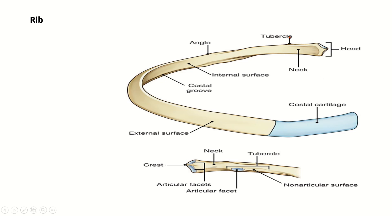Looking at a typical rib, the vertebral end is also called the head, which has two facets. Then there is the neck, followed by the tubercle and then the shaft. The shaft has a posterior angle. The costal groove is located close to the inferior margin. The rib has an internal surface and an external surface, an upper border and a lower border.